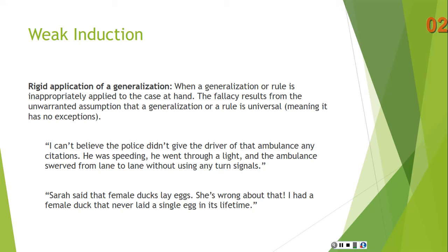Here's another example: 'Sarah said that female ducks lay eggs. She's wrong about that — I had a female duck that never laid a single egg in its lifetime.' This example of rigid application of a generalization stems from the fact that just because you say female ducks lay eggs, it doesn't mean you're saying there's no exception. Finding a single duck that doesn't lay eggs doesn't prove the general principle is false.